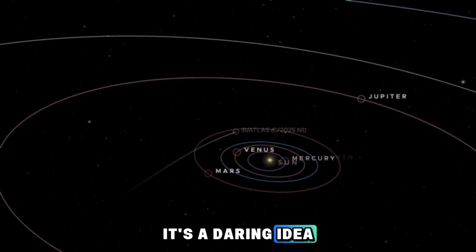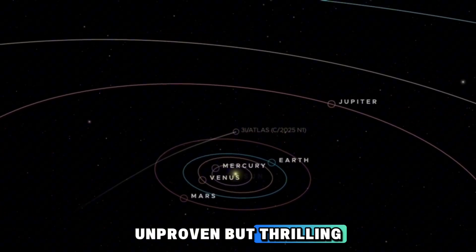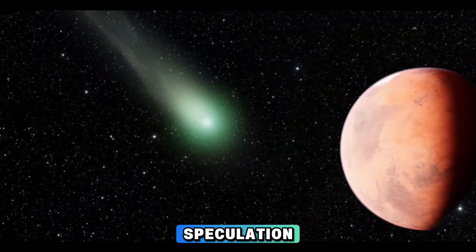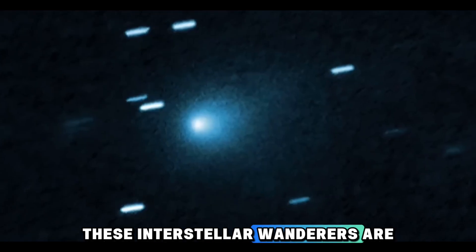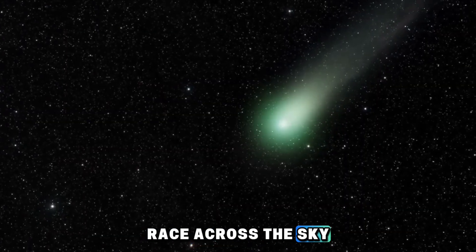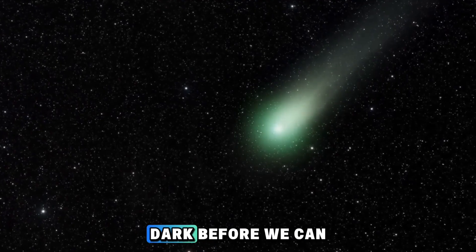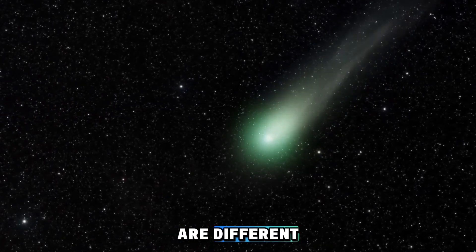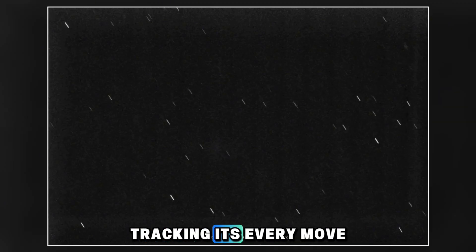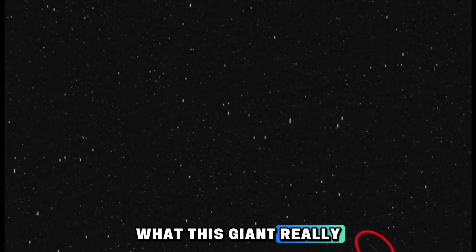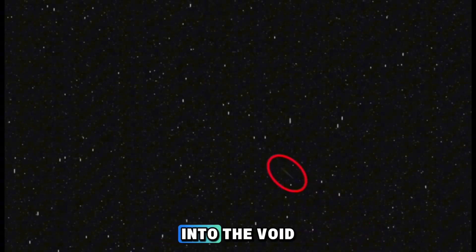It's a daring idea. Unproven, but thrilling. Just like Loeb's theories, it sits on the edge between science and speculation. These interstellar wanderers are elusive. They appear out of nowhere, race across the sky, and vanish into the dark before we can fully study them. But this time, things are different. We spotted 3I Atlas early, and with modern telescopes tracking its every move, humanity might finally uncover what this giant really is, before it slips back into the void.